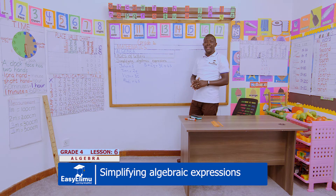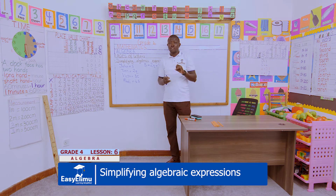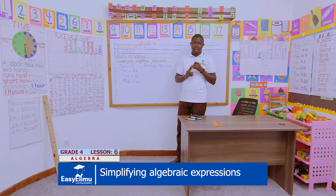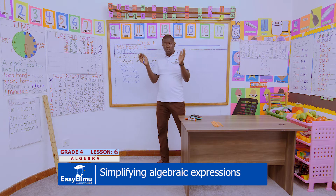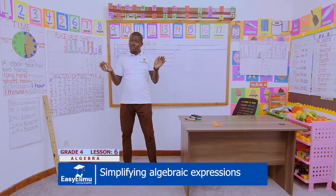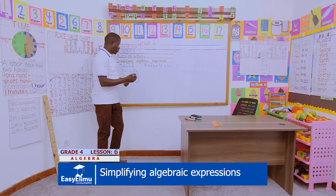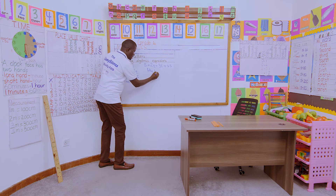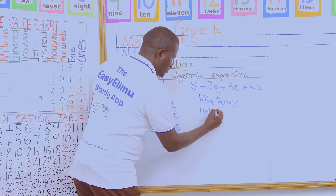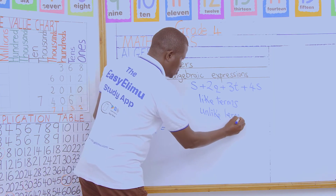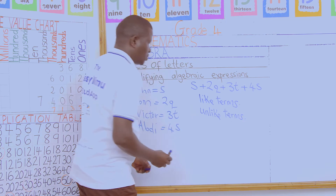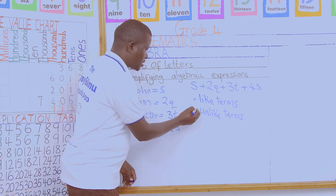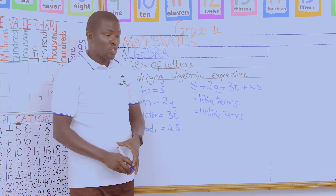When we are simplifying, we look for the like terms. We are now working with two concepts: like terms and unlike terms. Like terms can be brought together. Unlike terms, you cannot bring them together. That is very key. We are working with like terms and unlike terms — those are the two phrases we will be using.